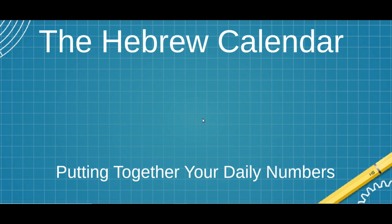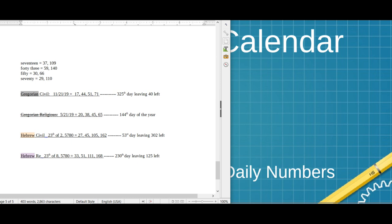Hey guys, welcome back to my sports again. In this video we're going to go over the Hebrew calendar and putting together your daily numbers for the Hebrew calendar. Hopefully this will help you guys understand where my daily numbers are coming from, how I arrived at them. That way you guys can pull the numbers for yourselves and get your daily numbers — just copy and paste the date numerology day after day like I do. In my other videos you can see I have my daily numbers on one side and my game numbers on the other side.